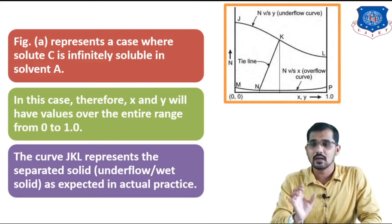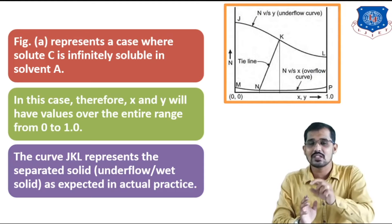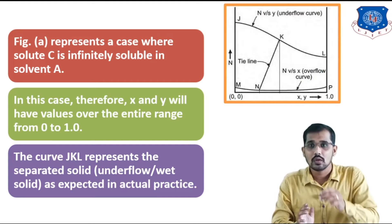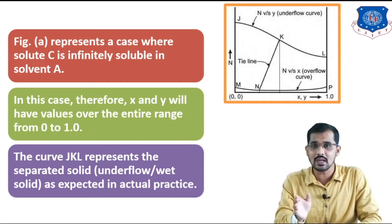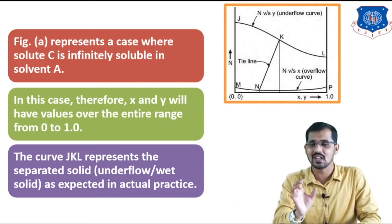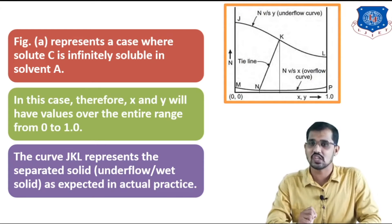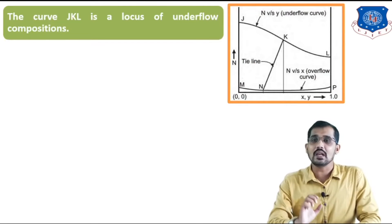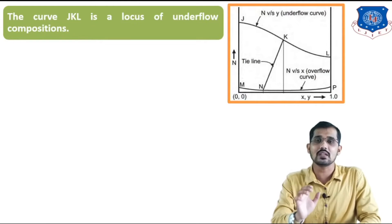The curve jkl represents the separated solid — that is the underflow or wet solid as expected in real practice. The jkl and M-and-p curves give you the amount of insoluble present. At point j there is some amount of y and N present; similarly at point k and at point l. So this curve gives you the amount of the insoluble present in the solution. The curve jkl is the locus of the underflow condition, while M and p is the overflow curve.